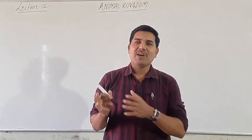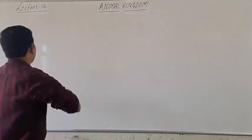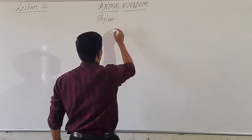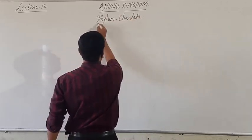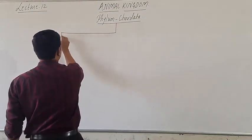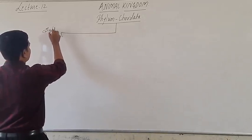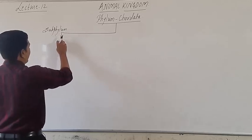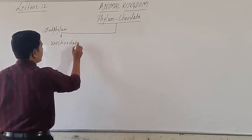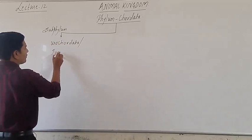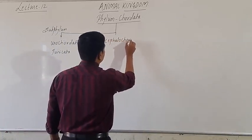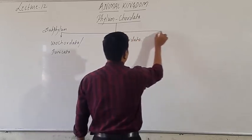Let us look at the phylum Chordata and its outline classification first. The phylum Chordata is divided into three subphyla. Here we have: Urochordata, which is also called Tunicata; then Cephalochordata; and the third one is Vertebrata.